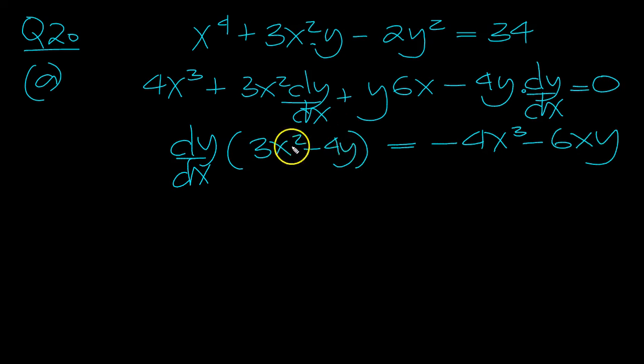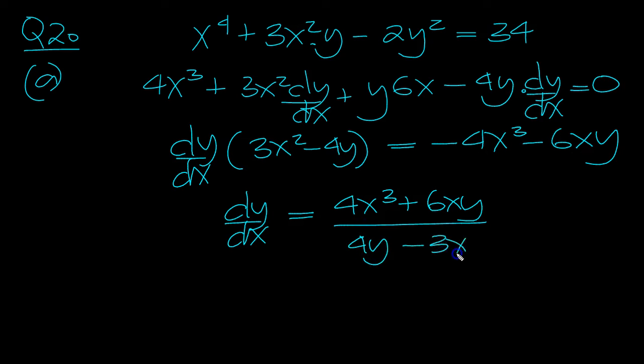And then flip this around and we'll run a minus through this when we put this underneath. So I'm going to run a minus through top and bottom. So, over 4y minus 3x squared. So I flip the minus through the thing underneath. So there's dy/dx.